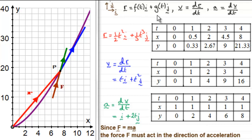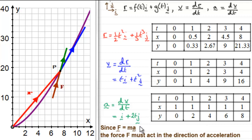To summarise: when given the position vector r as a function of t in the i and j directions, to get the velocity vector we differentiate the position vector with respect to time, and to get the acceleration we differentiate the velocity with respect to time. The force F always acts in the direction of the acceleration. This is an introduction; further videos will look at questions revolving around this idea.